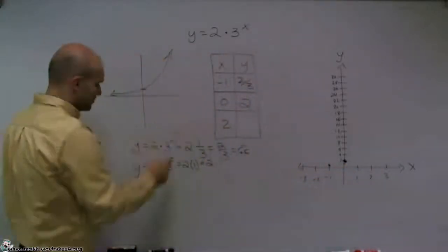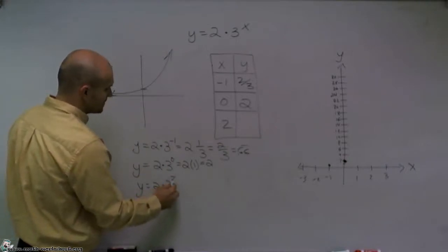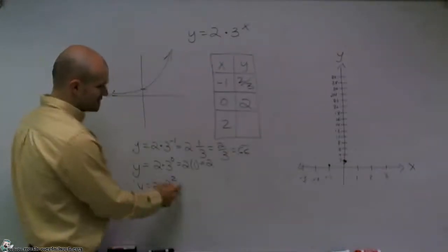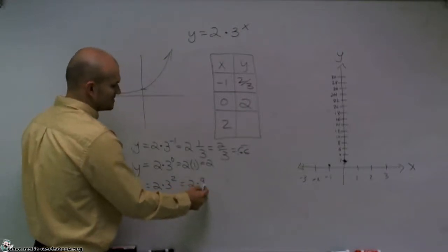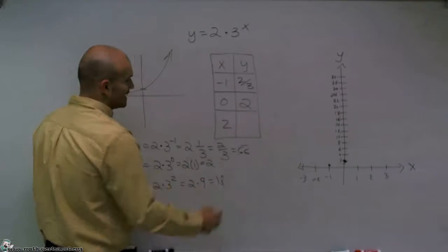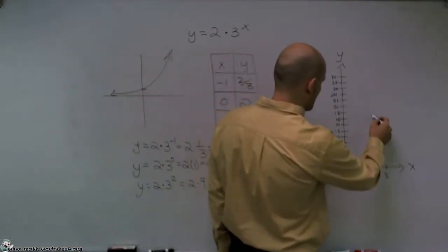Lastly, let's just plug in 2. So I have y equals 2 times 3 to the second power. 3 to the second power equals 9, and 2 times 9 is going to equal 18. So I go over 2, and then I go up 18.